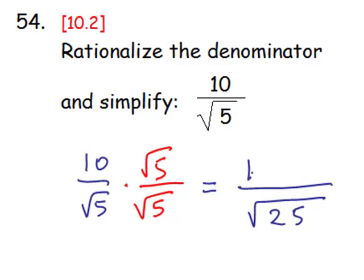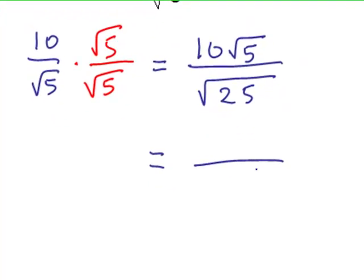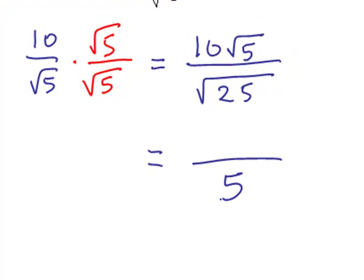The numerator doesn't simplify at all, it's just 10 times the square root of 5, just as we see it. But that denominator now can be written as the whole number 5, and that's our purpose of rationalizing the denominator.